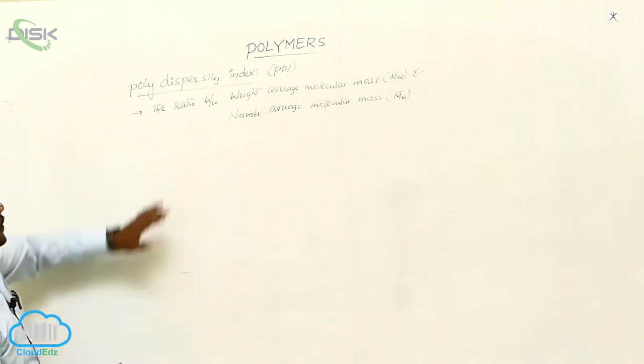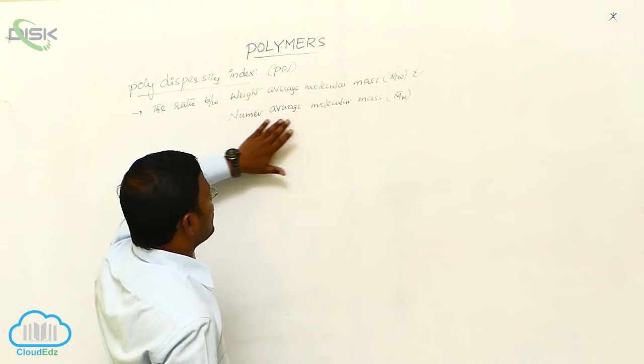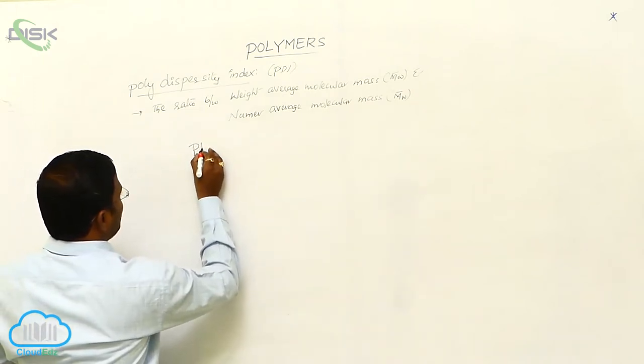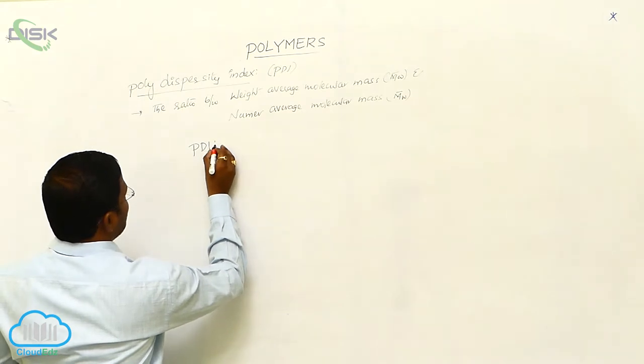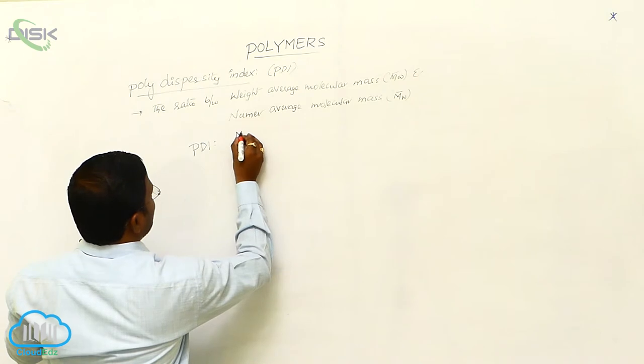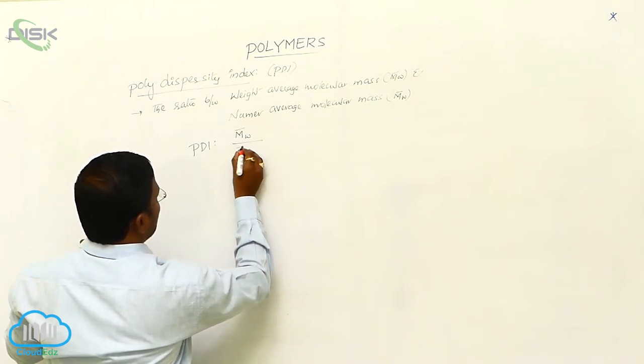Once again, the ratio between weight average molecular mass and number average molecular mass is called PDI. So, polydispersity Index, PDI, equals M bar W by M bar N.